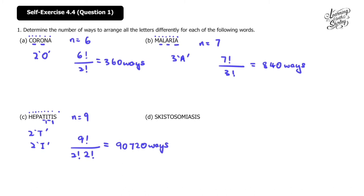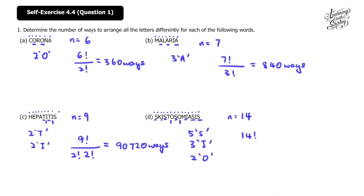For part (d), 'schistosomiasis': there are 14 letters. Checking for repeats: there are 5 S's, 3 I's, and 2 O's. So the number of ways will be 14 factorial over 5 factorial times 3 factorial times 2 factorial, and the answer is 60,540,480 ways.